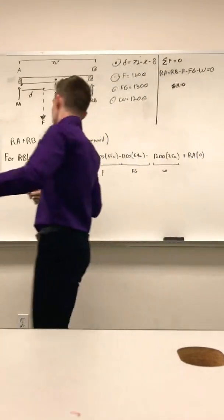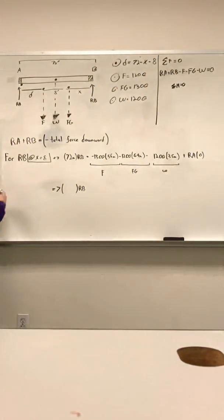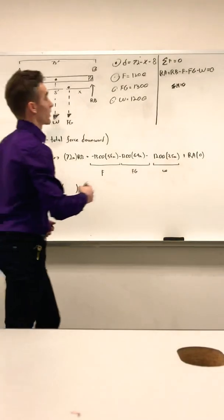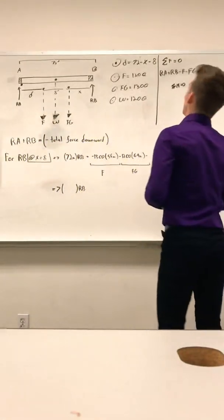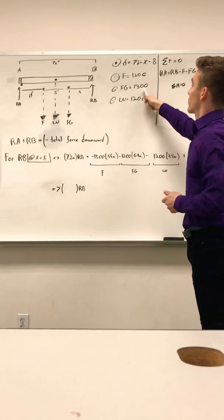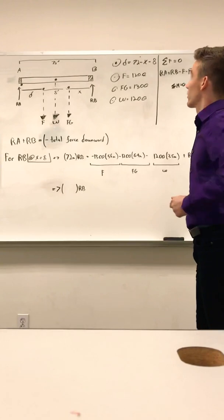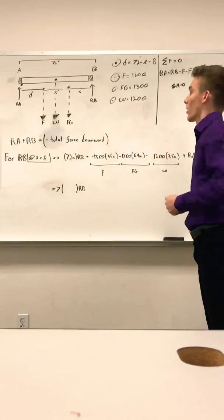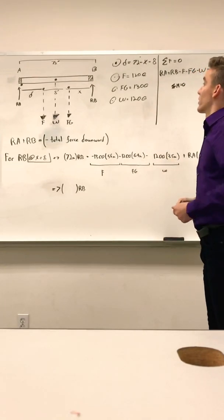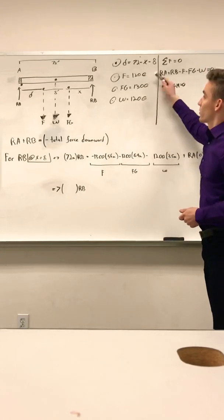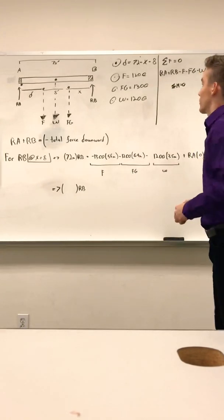In the problem, at least in my version, I'll write it over, I guess I'll write it over here. Actually, I already written that. Your force G is 1,300 force pounds, your weight is 1,200 force pounds, and your force, just force 1 or whatever, is just 1,200 again. I don't know why these are both 1,200, just have them, don't get confused there.